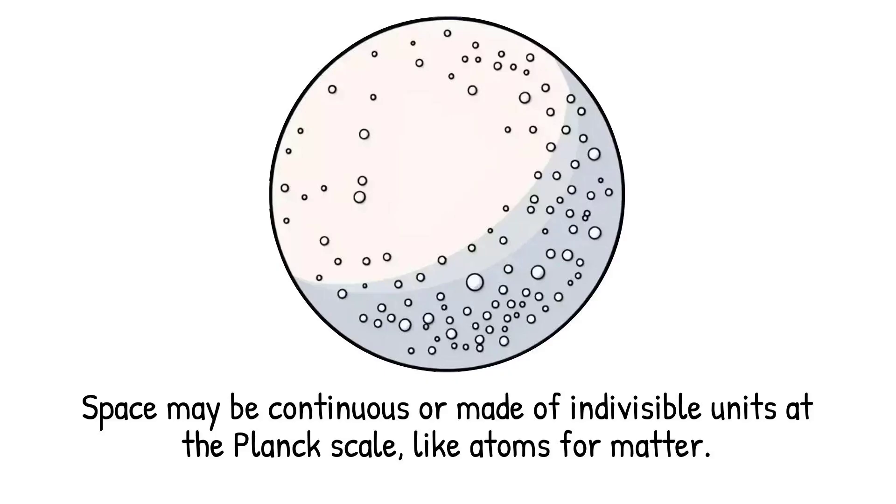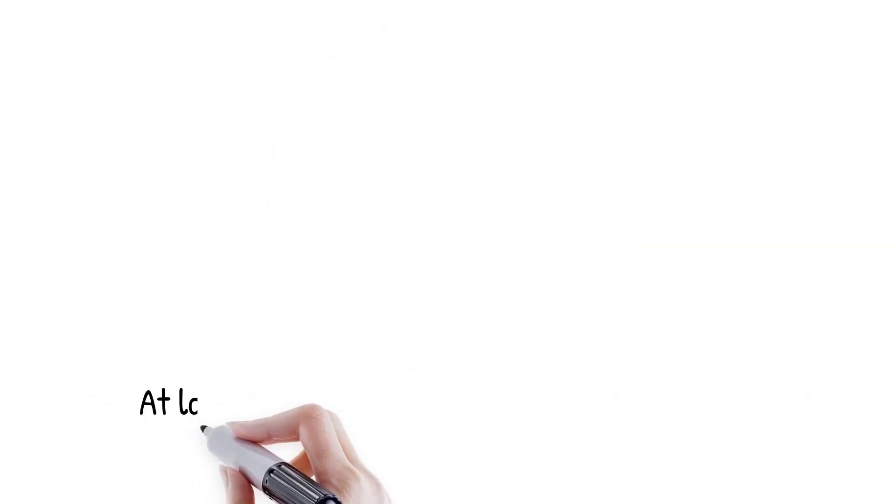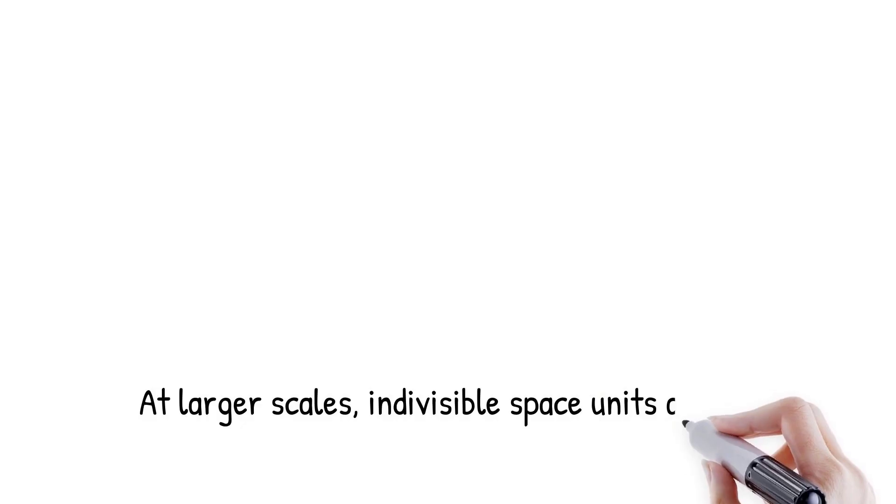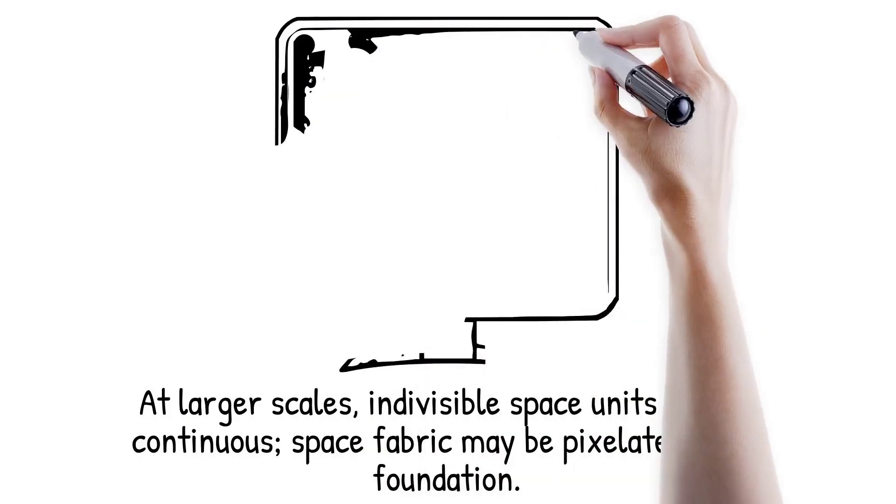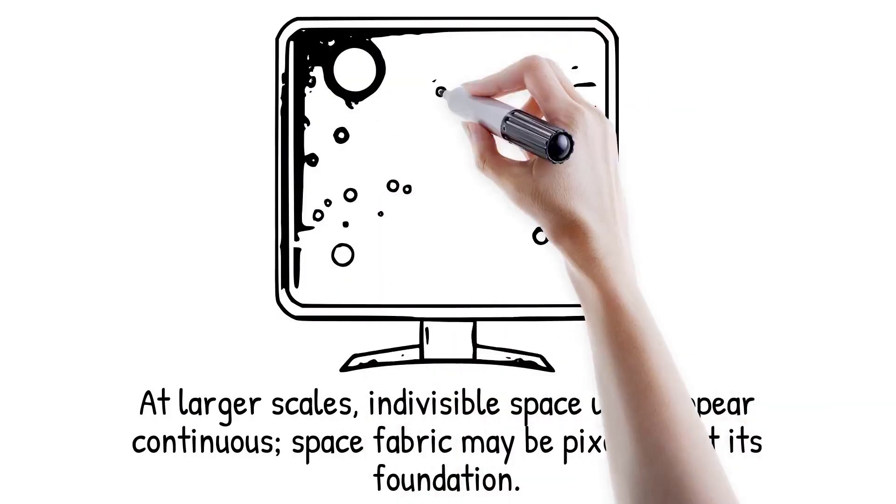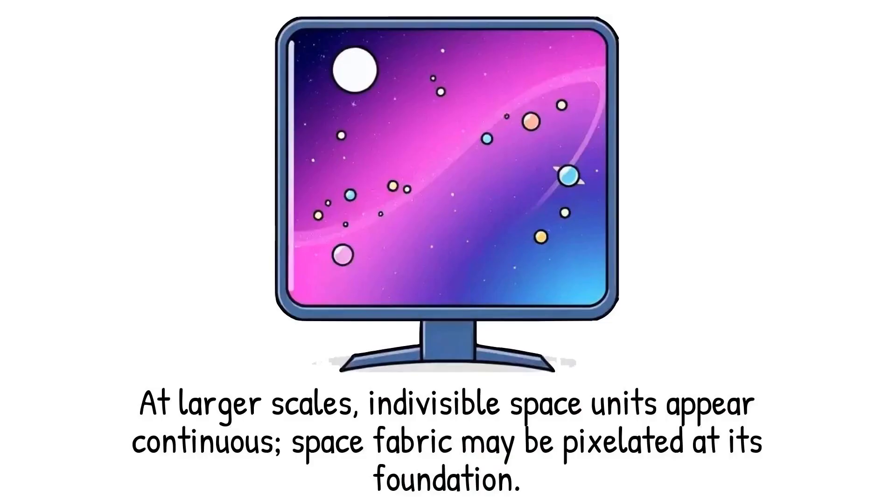Loop quantum gravity proposes that spacetime is built from discrete atoms of geometry. It is like a digital screen that looks smooth from a distance but reveals pixels up close.